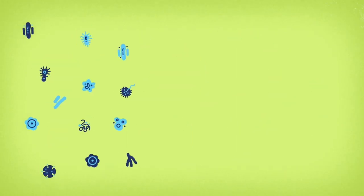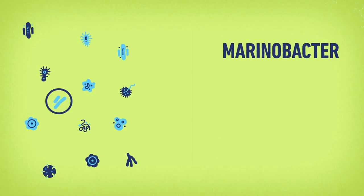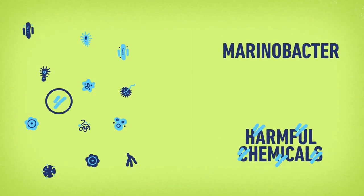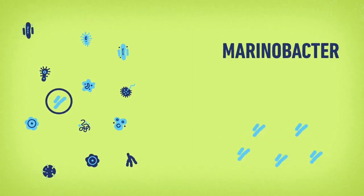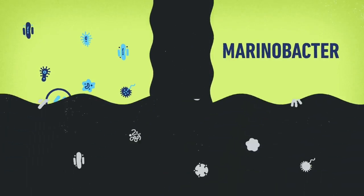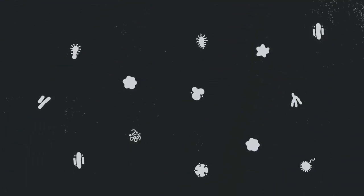So how can microbes be used to prevent the damage caused? Well, certain microorganisms like marinobacter are known to break down the harmful chemicals into safer non-toxic compounds. If left to their own devices, the microbes in the environment would eventually break down the oil.